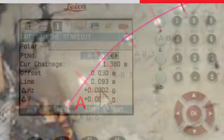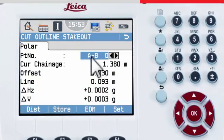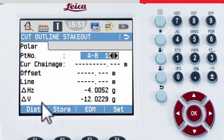To move to the next drill point, with a distance measured, increment the point number and start the stake out process again.